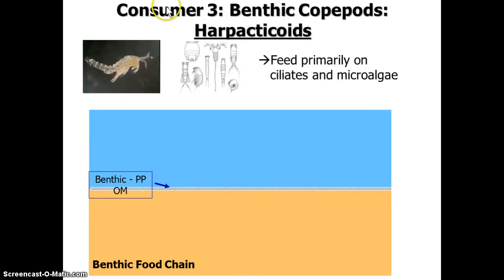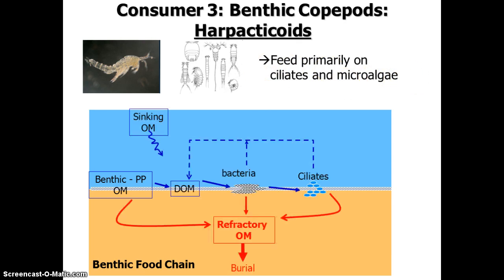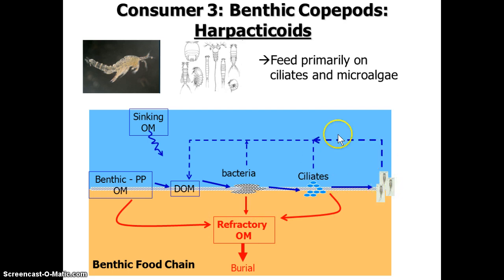The next level of consumers is essentially the same next level as in the water column. We call these guys harpacticoid copepods — just know them as benthic copepods. They're capable of feeding on the ciliates and the microalgae in the benthos. If we plug them into the picture, we have organic matter moving through this chain and being recycled, and if it's not, it's removed through burial. Refractory just means hard to break down — organic matter that nobody's using, so it's removed. Copepods can add to recycling or to removal and burial of organic matter.